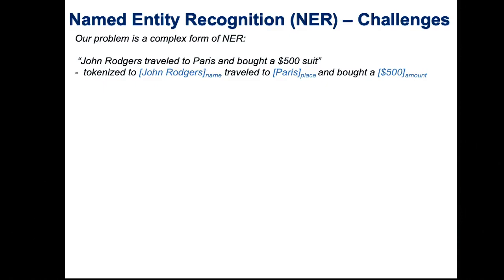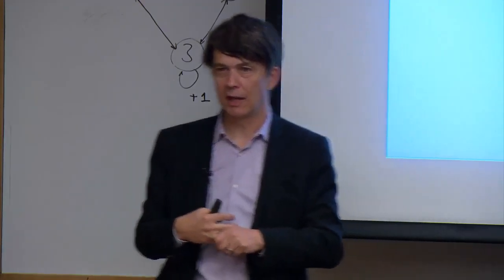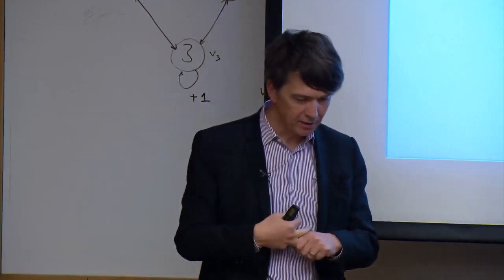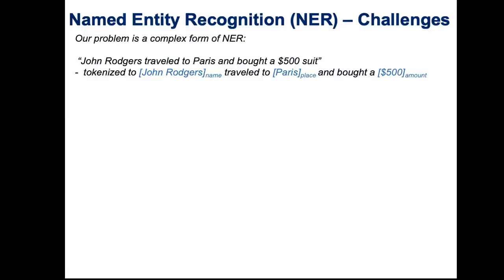Identifying what a word is — whether it's a precursor, the target of synthesis, or an operation — falls under named entity recognition, a form of NLP. In typical natural language it's quite easy: 'John Rogers traveled to Paris and bought a $500 suit' — you can tokenize that as a name, a place, and an amount. But ours is a much harder tokenization problem, because we have non-unique representation: people will say 'lithium manganese oxide spinel,' or write LMO.